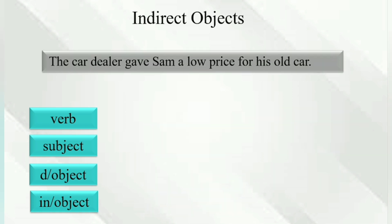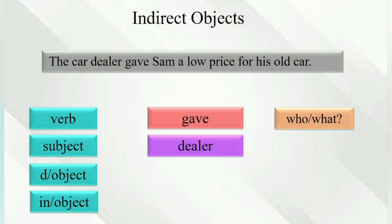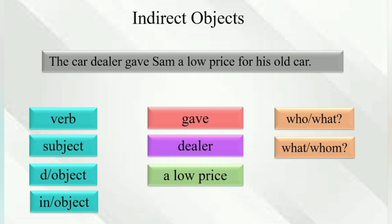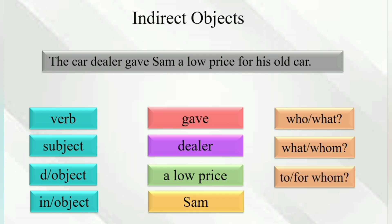'The car dealer gave Sam a low price for his old car.' Gave — who gave? The car dealer. The car dealer gave what? A low price. A low price to whom? Sam. So 'Sam' is the indirect object.